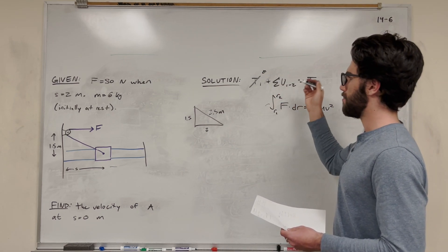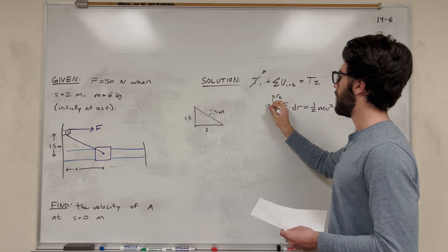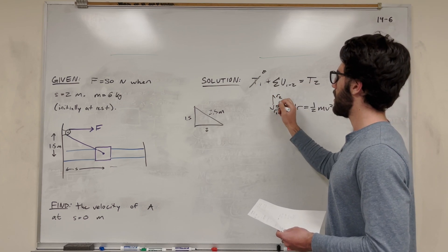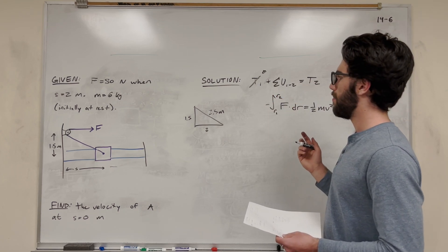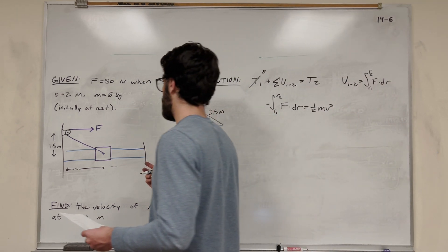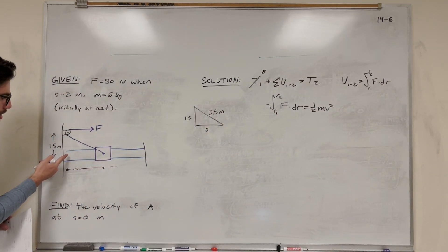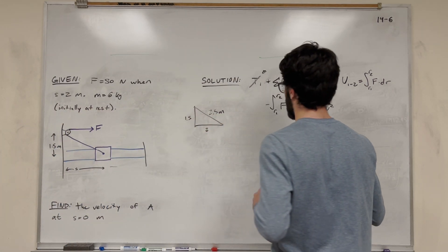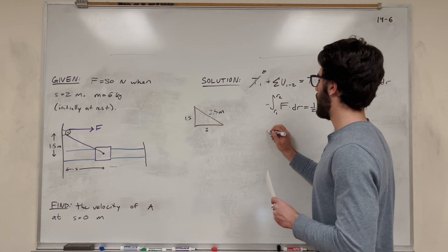So we're going to start with radius 1 of 2.5. Then our radius final, we need to imagine as s becomes 0, all that's left is this vertical distance of 1.5. So radius 1 is going to be 2.5, and radius 2 is going to be 1.5.